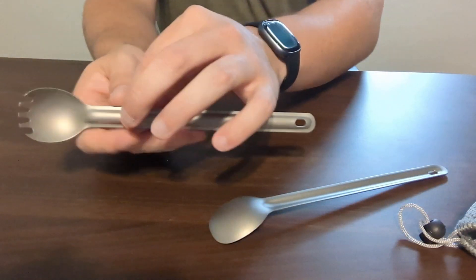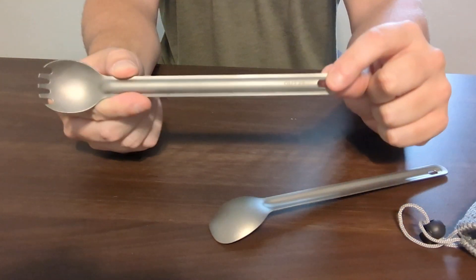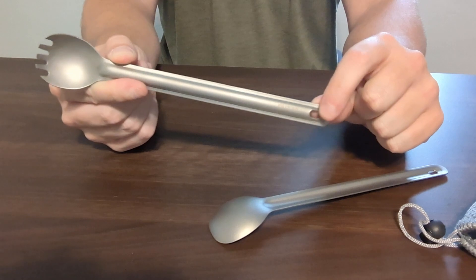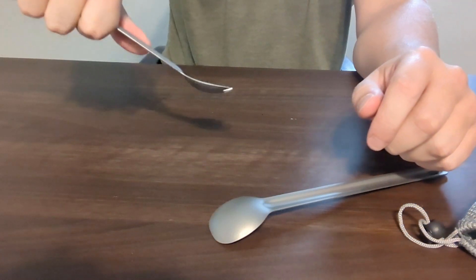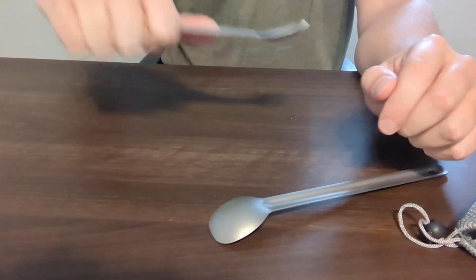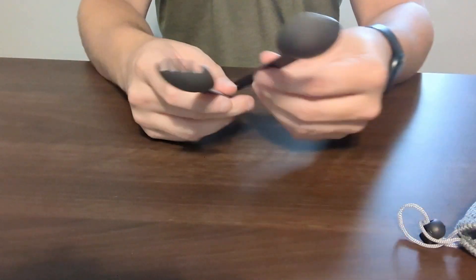The handle itself is long, just under nine inches in length. This makes getting food out of those freeze-dried bags a lot easier than you might expect.